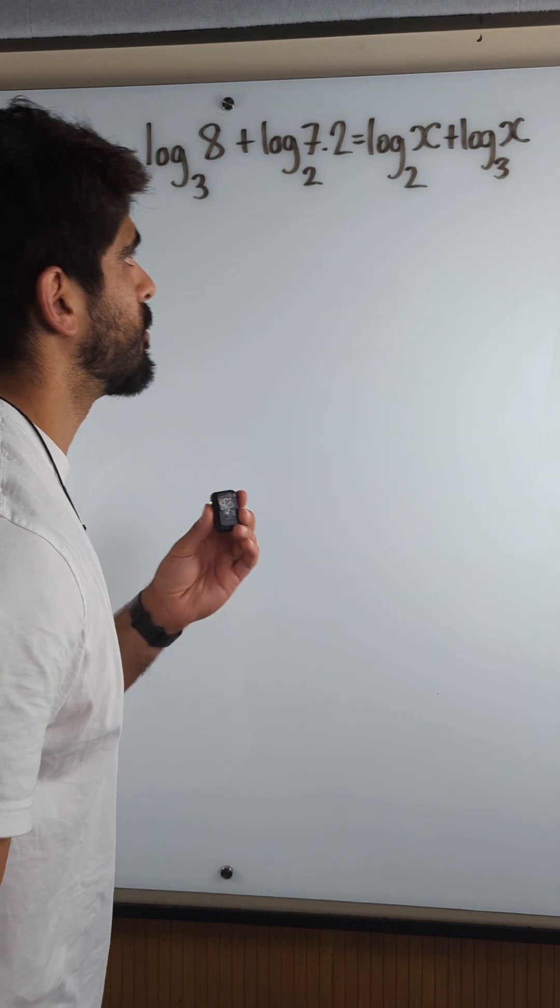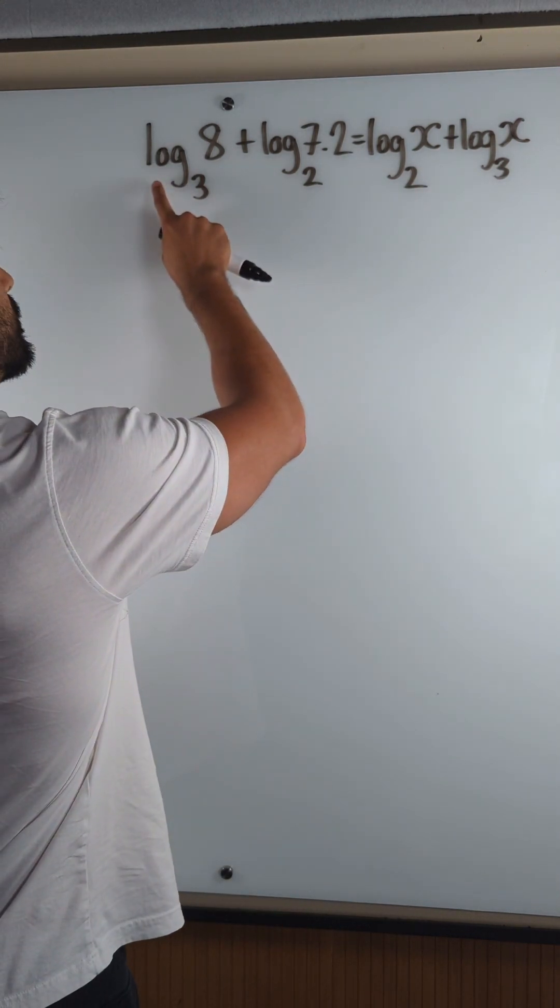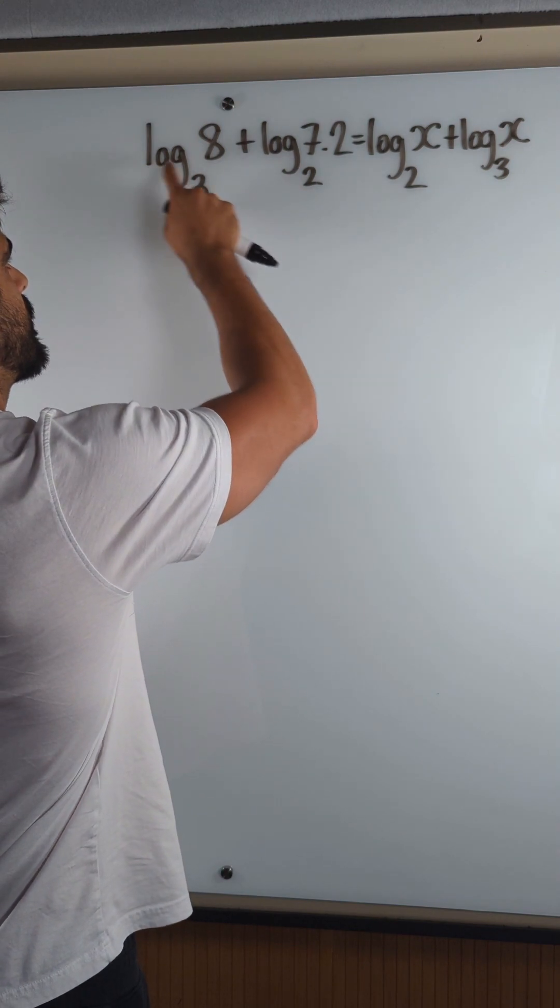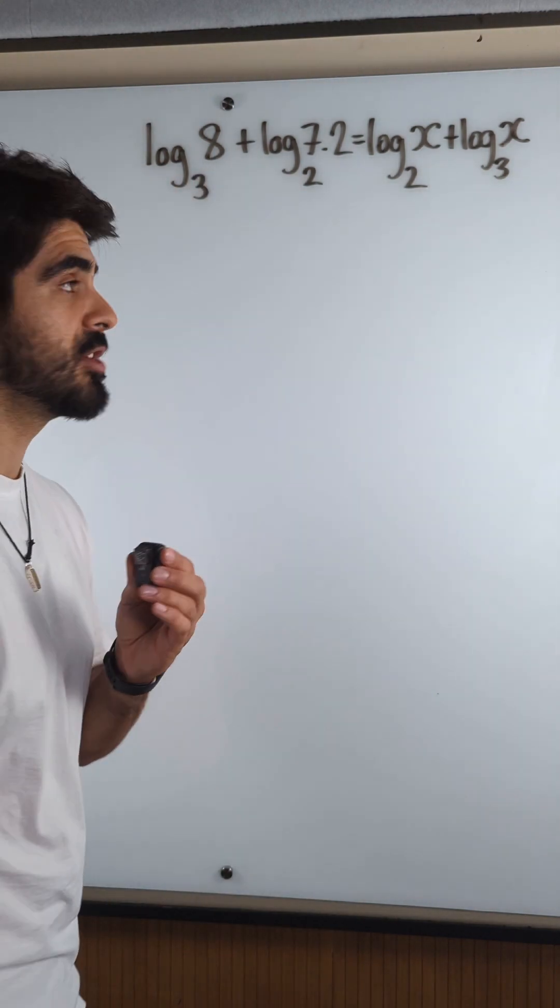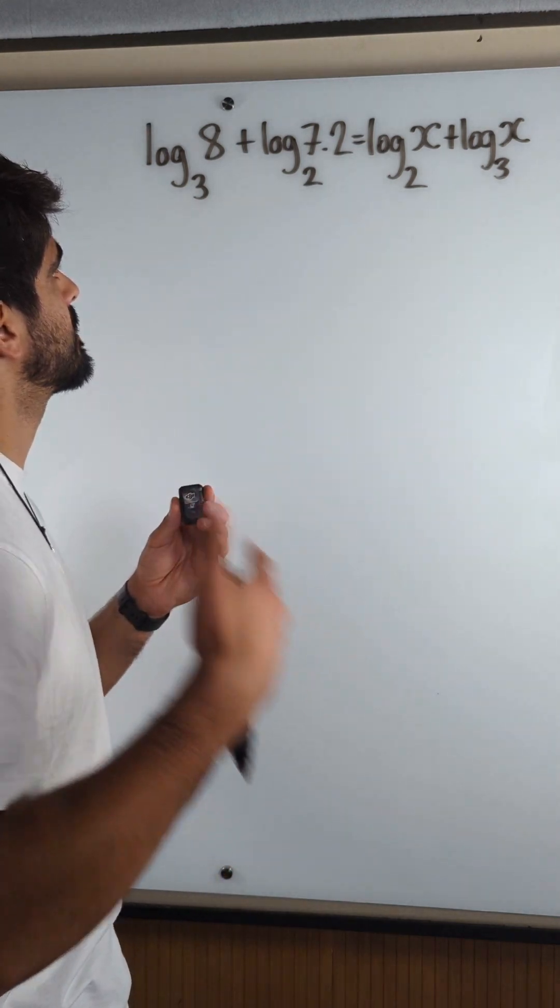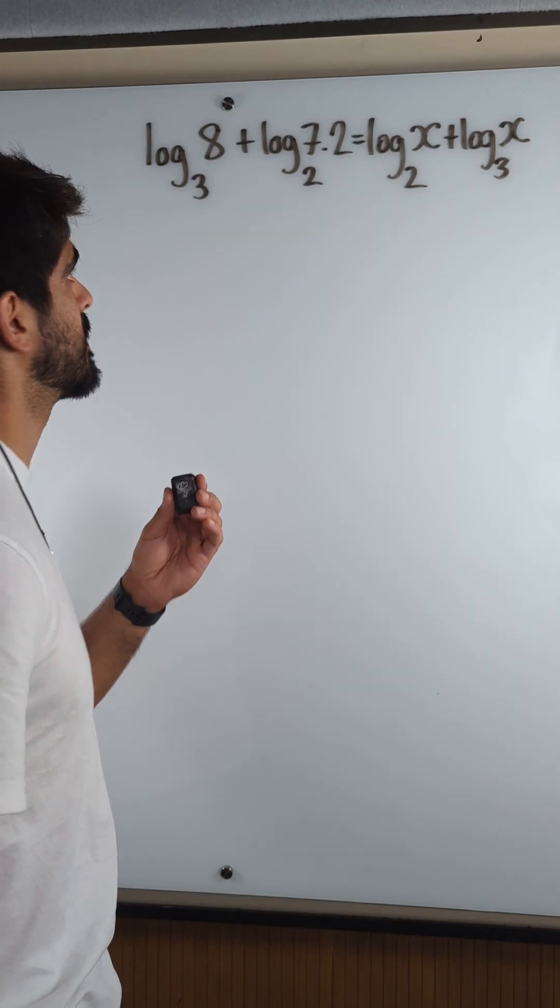Well, what's the easier one to change to? I'm looking at this log base 3 of 8. If that was log base 2 of 8, that would actually be a much easier calculation to do because log base 2 of 8 is 3. It's saying 2 to the power of what is 8.